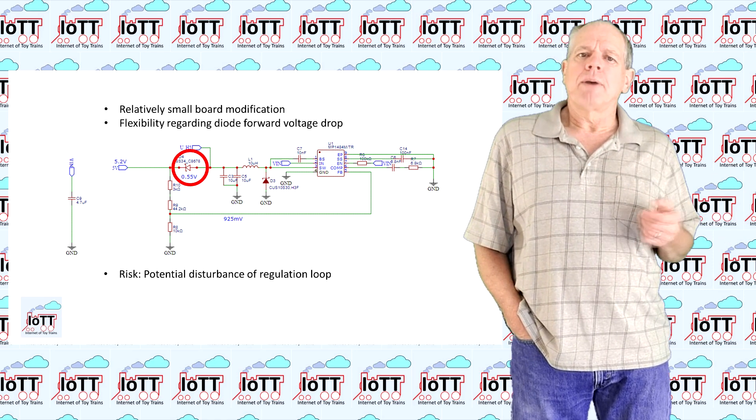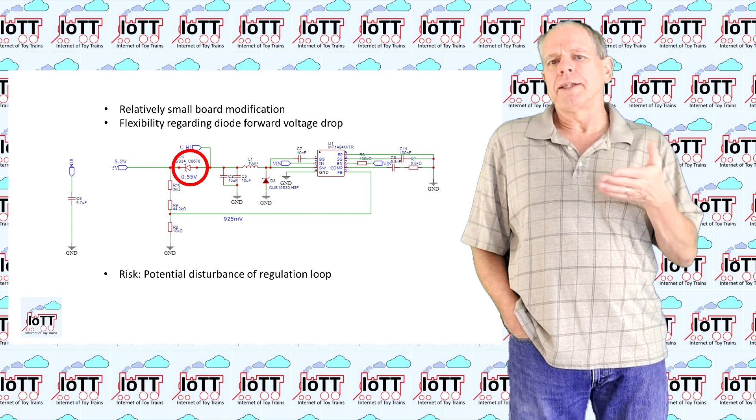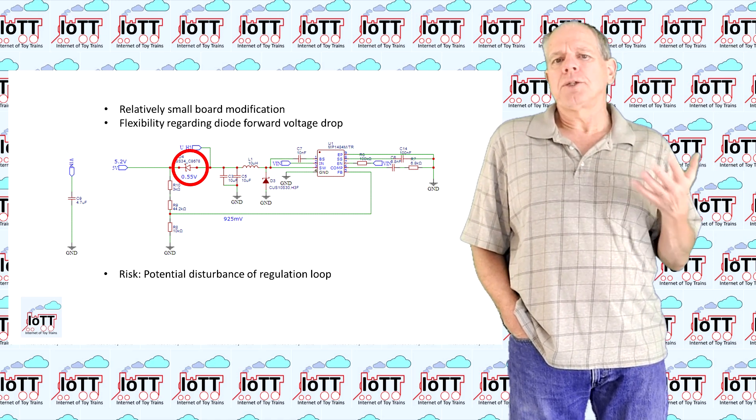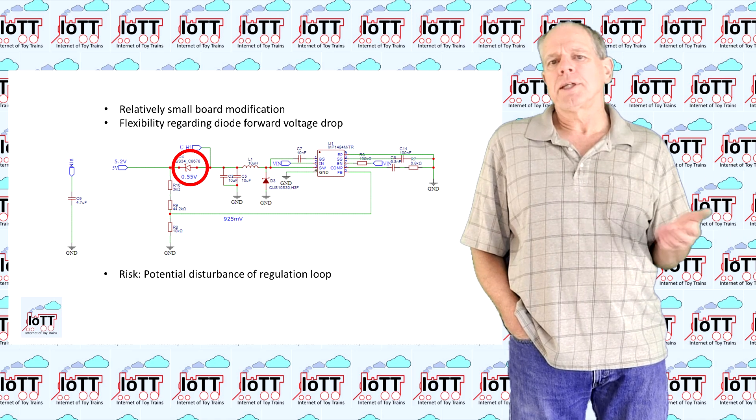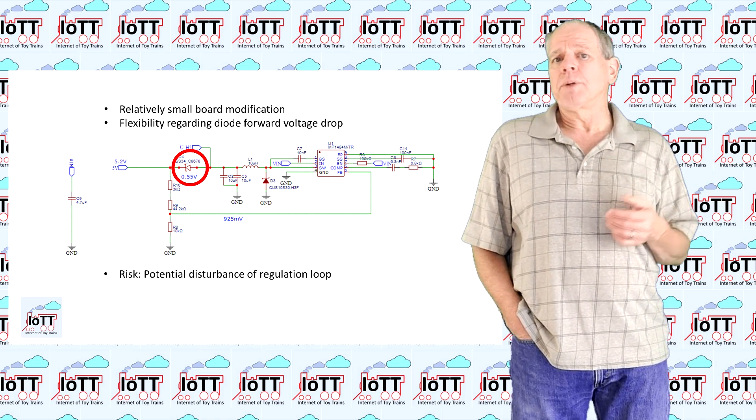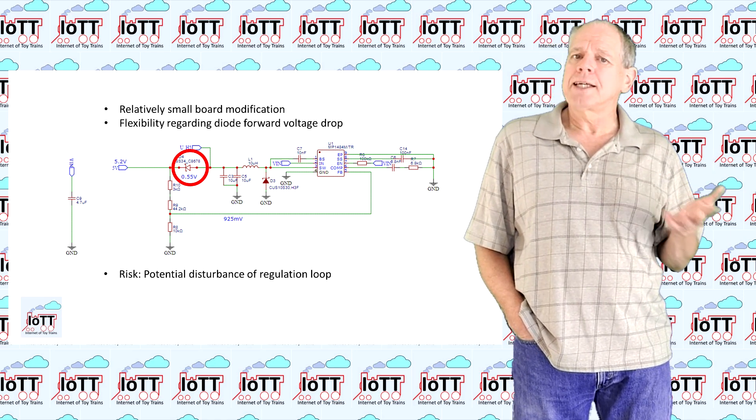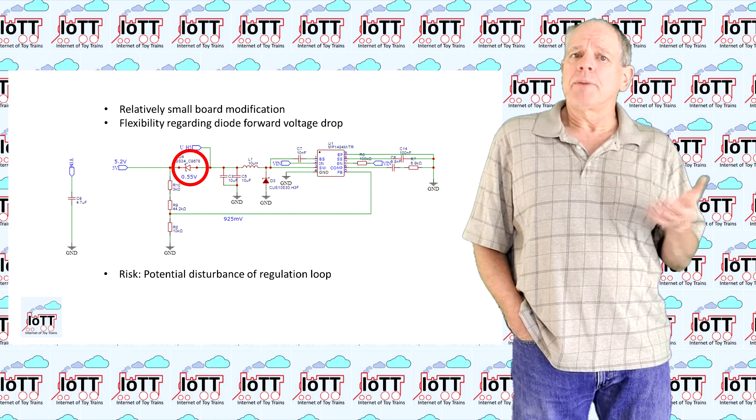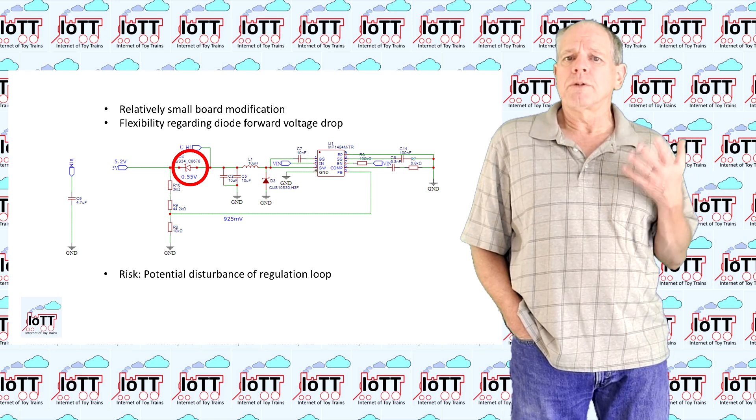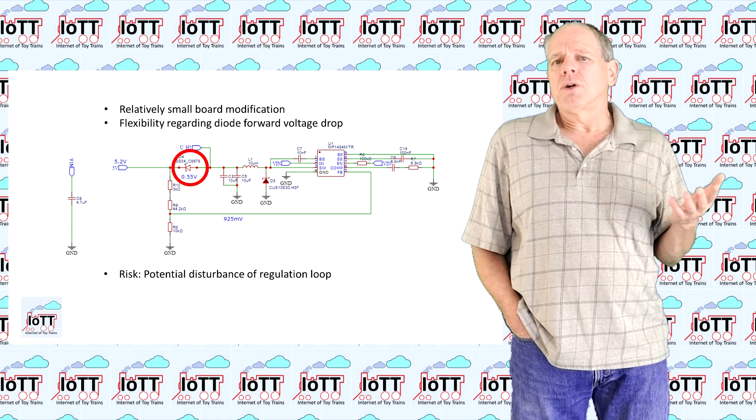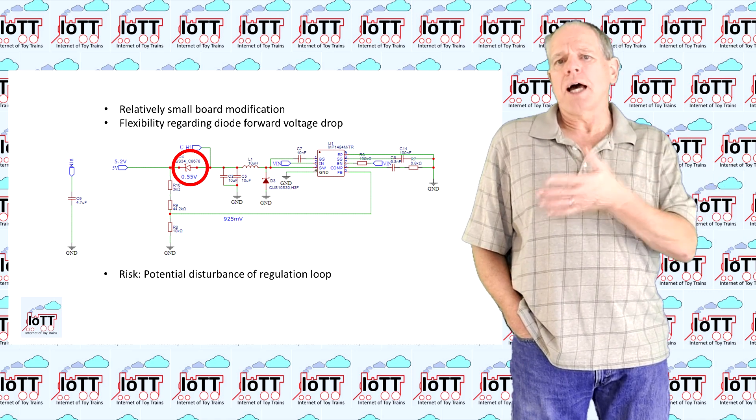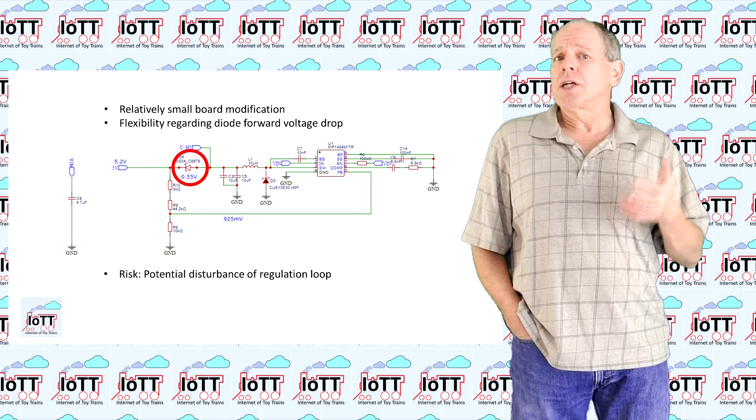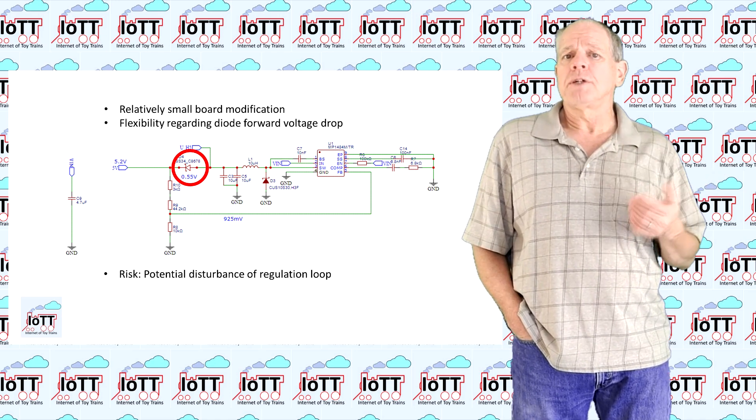With that in mind, installing the diode between the coil and the feedback connection had two advantages. First, it resulted in a much simpler modification of the board and second, it would make the feedback resistor values independent of the forward voltage of the diode, so it would be possible to change the type of the diode without changing the resistor values of the feedback loop.